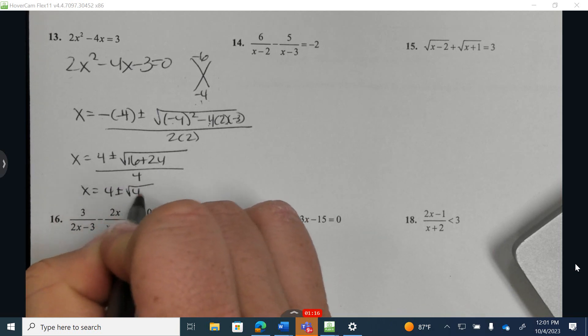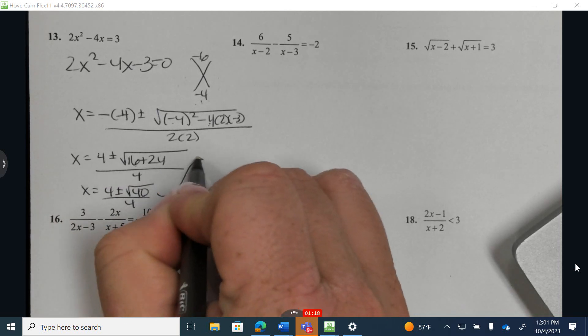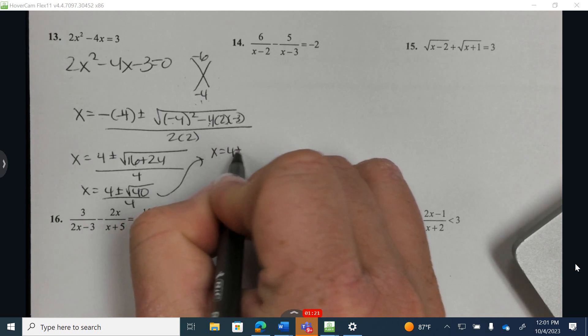16 and 24 is 40, all over 4. Now, we are going to break down the square root of 40.